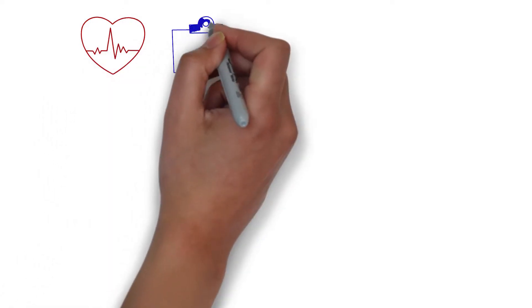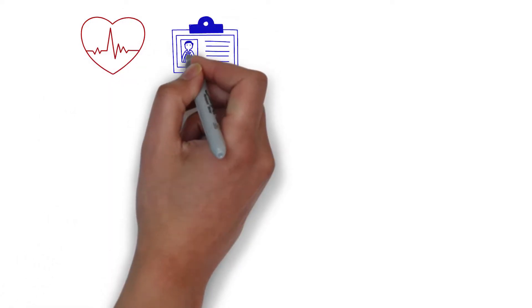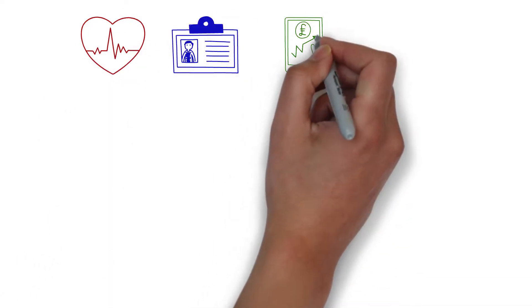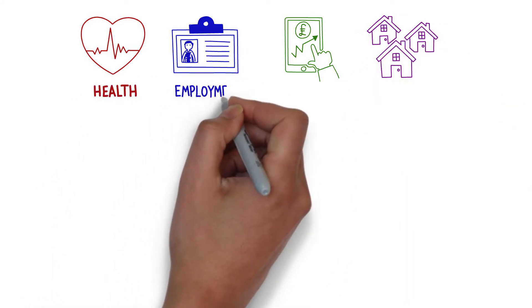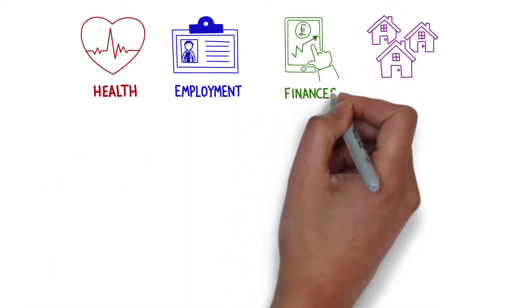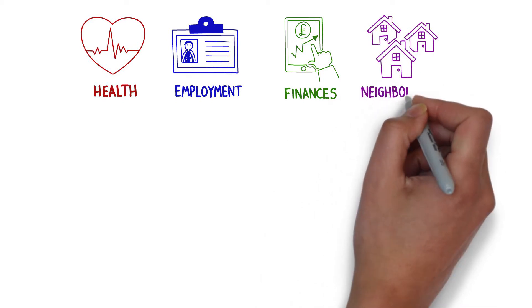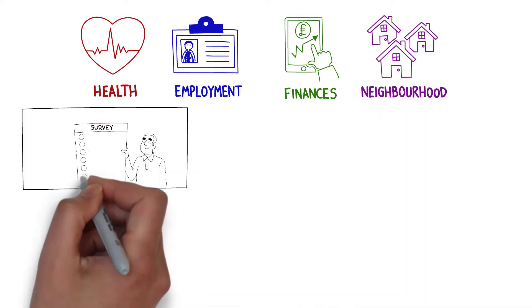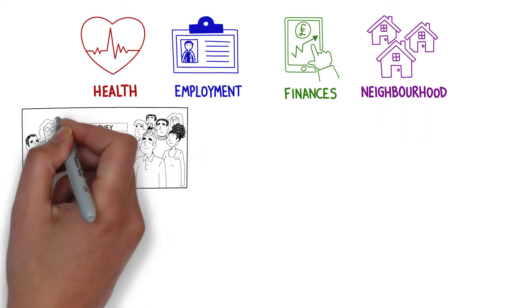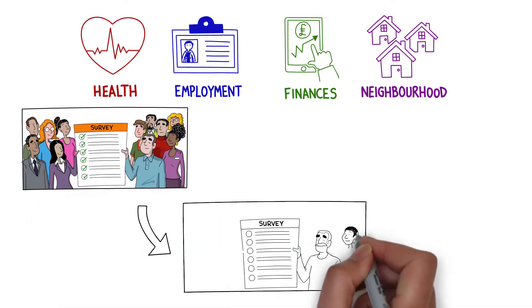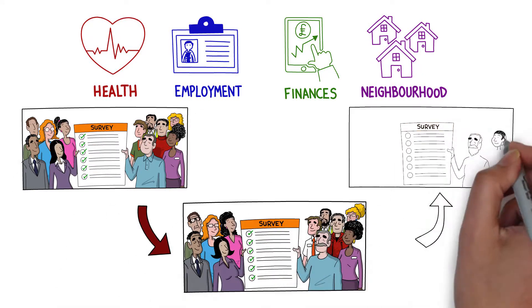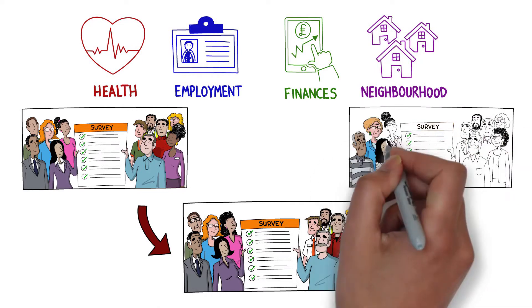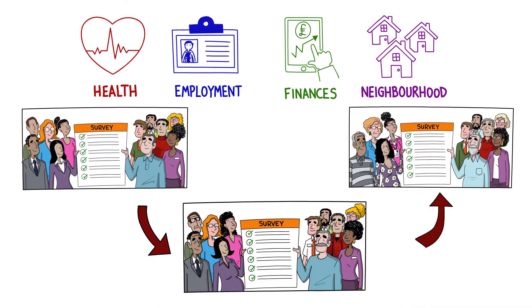This is where survey data comes in. Surveys provide detailed information about individuals, such as their age and gender and, depending on the focus of the survey, their health, employment, behaviours, household finances, the area they live in and so on. These surveys often question the same people more than once, collecting data about changes in individuals and families' lives over time.